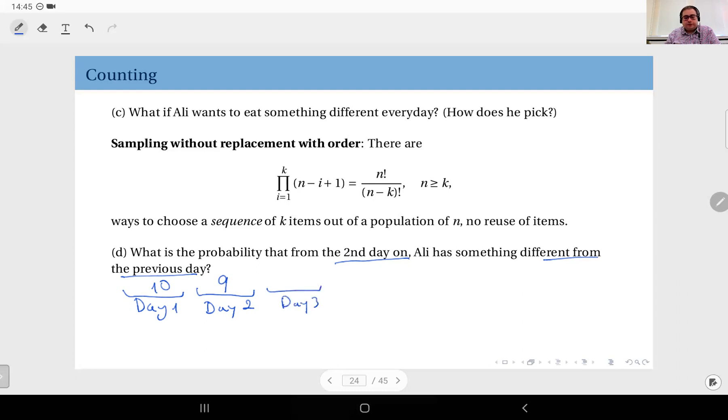This is the difference from both scenarios we have just seen. Now the question says different from the previous day only. So different from day number two—whatever he had on day number two, he doesn't want to choose it on day number three.